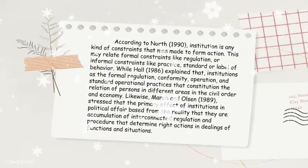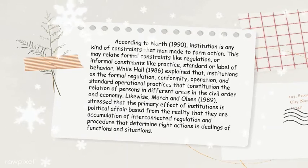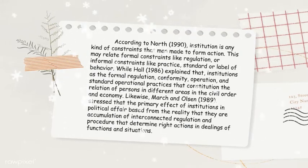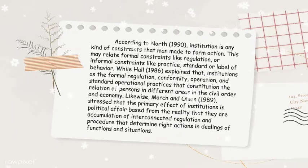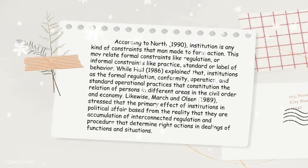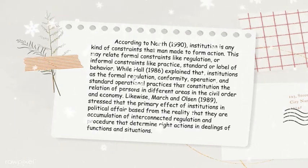According to North (1990), institution is a kind of constraint that man made to perform action. Hall (1986) described it as formal regulation, conformity, operation, and standard operational practices. March and Olsen (1989) stressed that the primary effect of institutions in political affairs is based on the reality that they are an accumulation of interconnected regulation and procedure that determine right actions in terms of functions and situations.